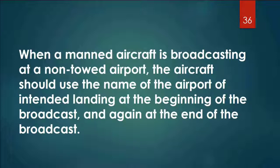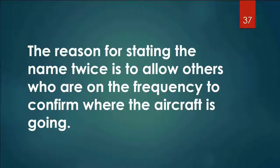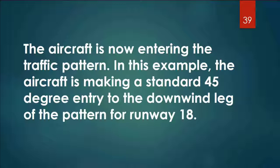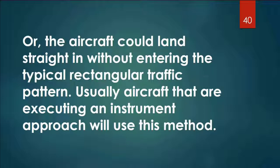When a manned aircraft is broadcasting at a non-towered airport, the aircraft should use the name of the airport at the beginning and end of the broadcast. The next broadcast as they enter the pattern: 'Town and Country traffic, Cessna 123 Bravo Foxtrot is entering the pattern, midfield left downwind for runway 18, Town and Country traffic.' The aircraft could also land straight in without entering the typical rectangular traffic pattern — usually aircraft executing an instrument approach use this method. VFR is visual flight rules; IFR is instrument flight rules, where someone is flying a direct path into the airport on instruments.